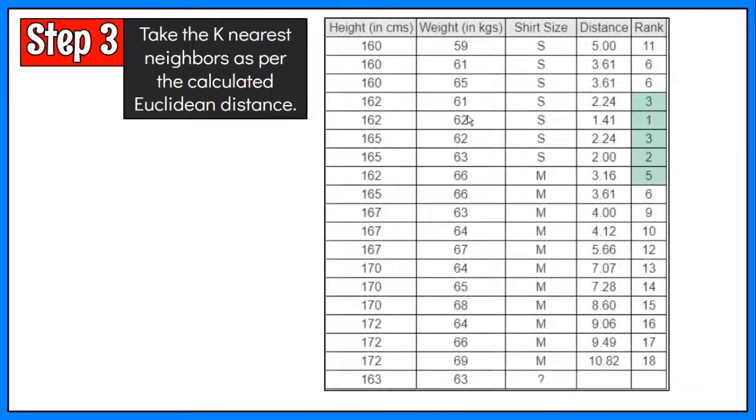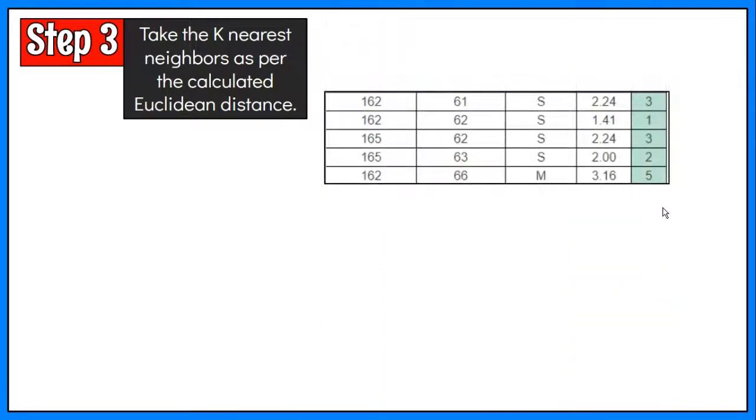Step 3: Take the K nearest neighbors as per the calculated Euclidean distance. We will be able to identify the nearest neighbors by calculating the rank in terms of distance. The smallest distance value will be ranked 1 and considered the nearest neighbor.